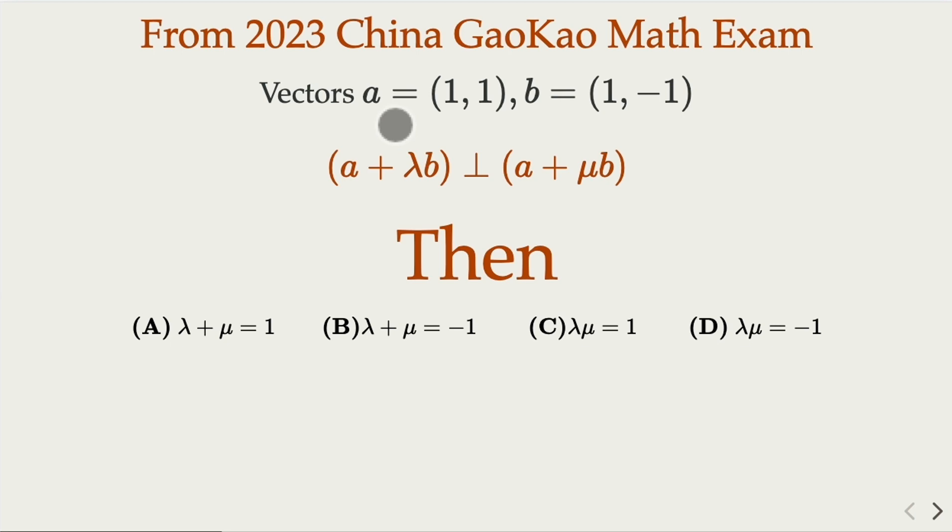So we have two vectors a and b, and some numbers lambda and mu, such that a plus lambda b, which is a vector by the way, is perpendicular with a plus mu b.